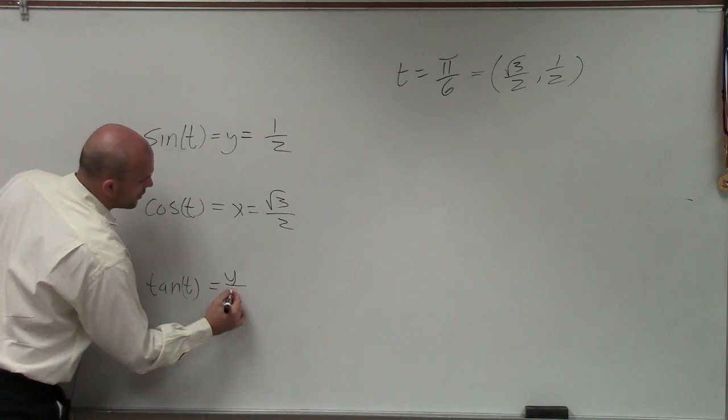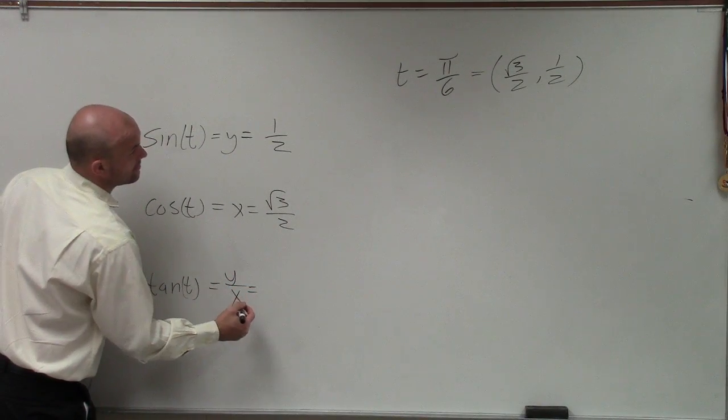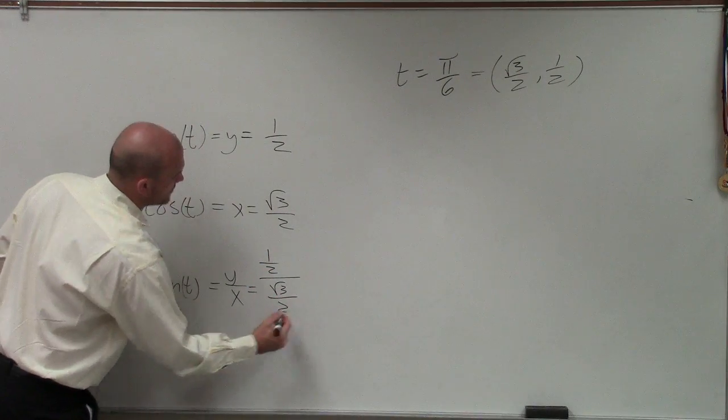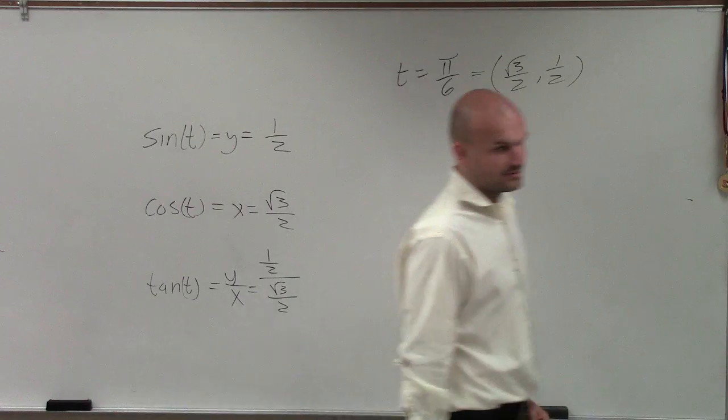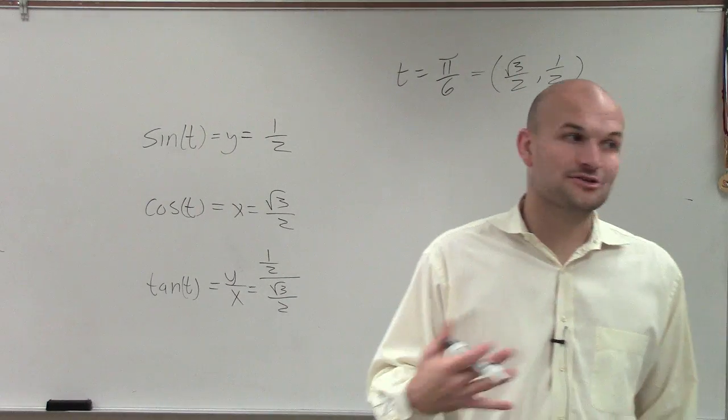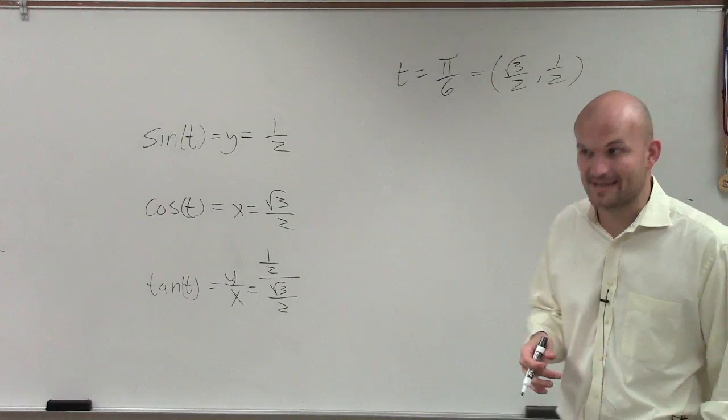Tangent is y over x. So that's going to be 1 half divided by square root of 3 over 2. Now this one's going to get a little fun. So I'll show my work now, but I'm not going to be able to show all this work every single time, because this does take a while.